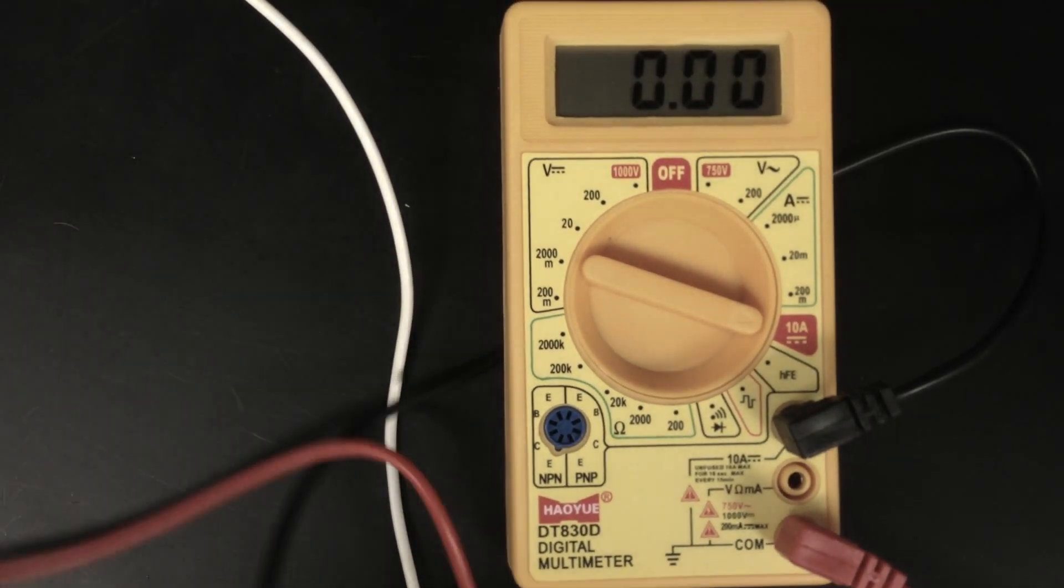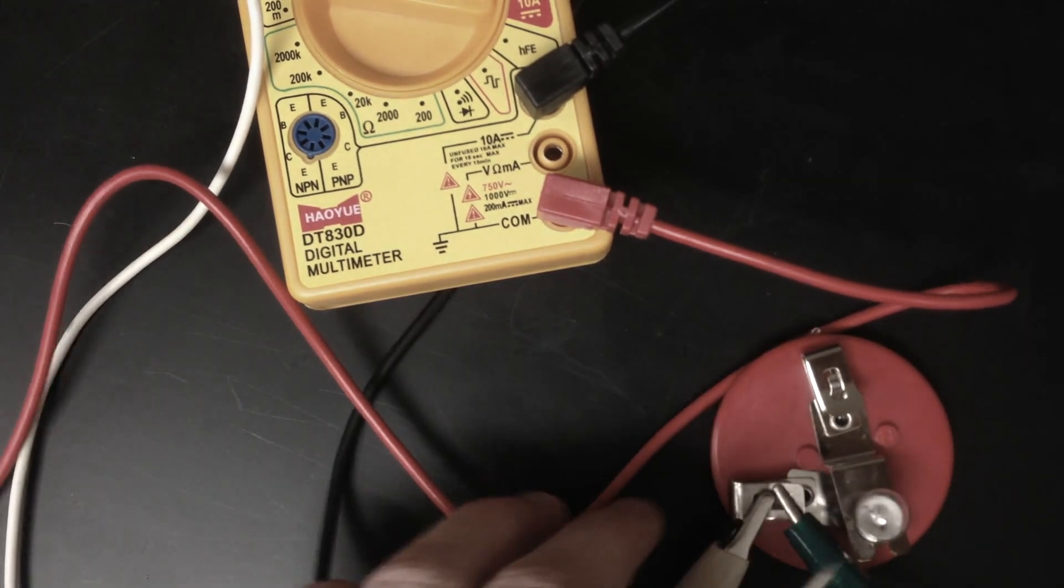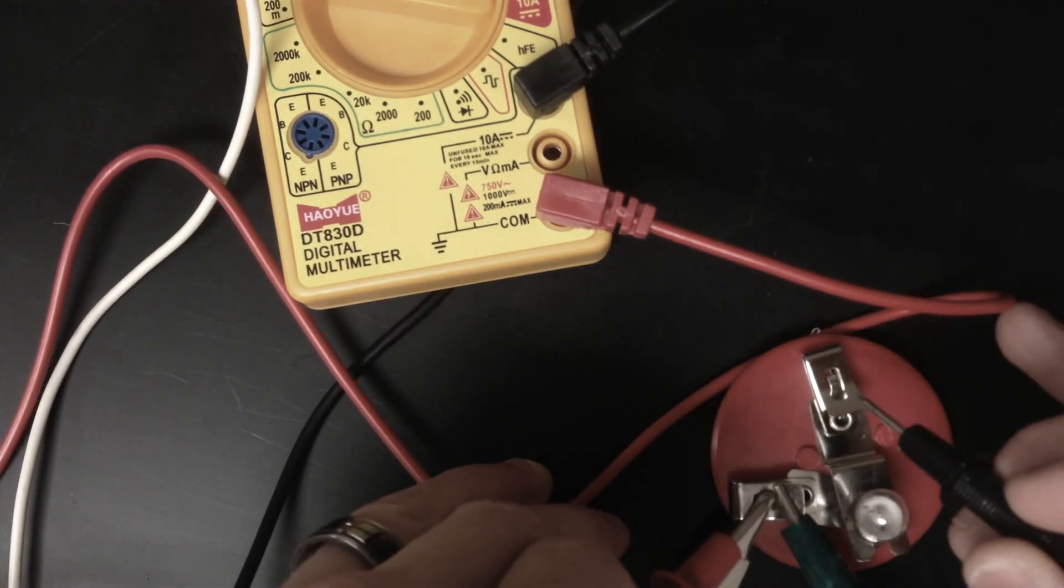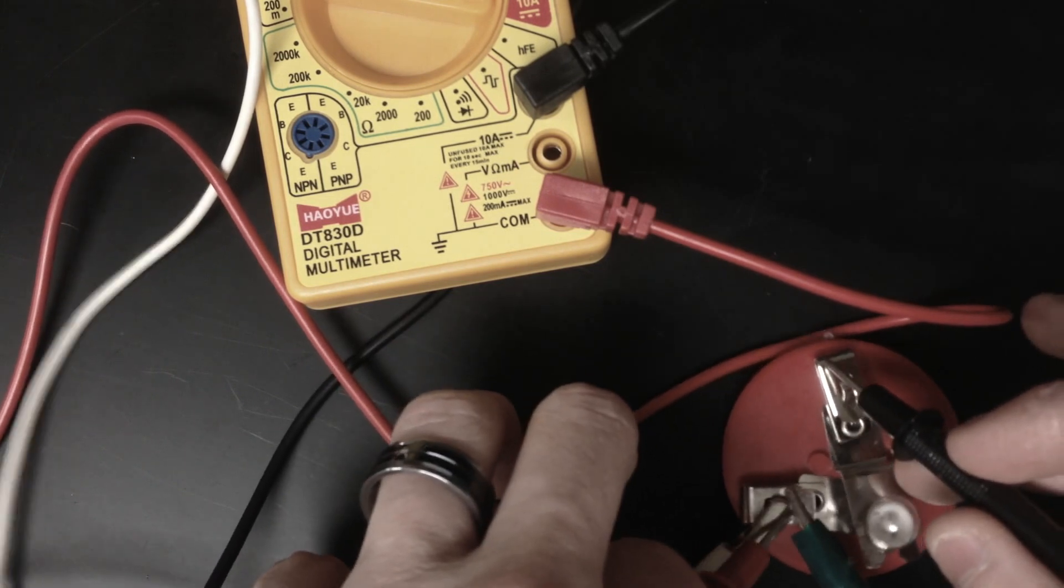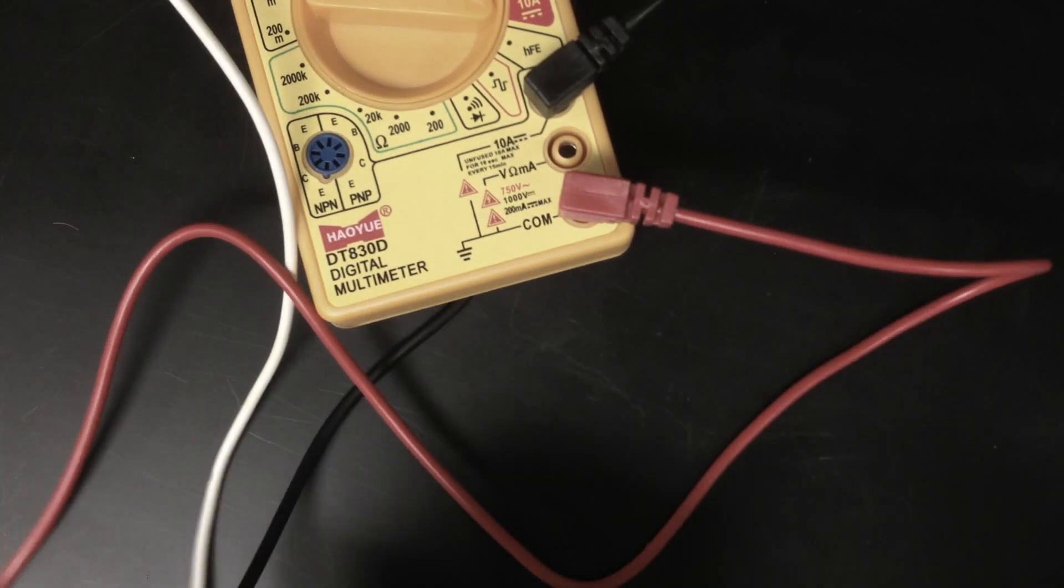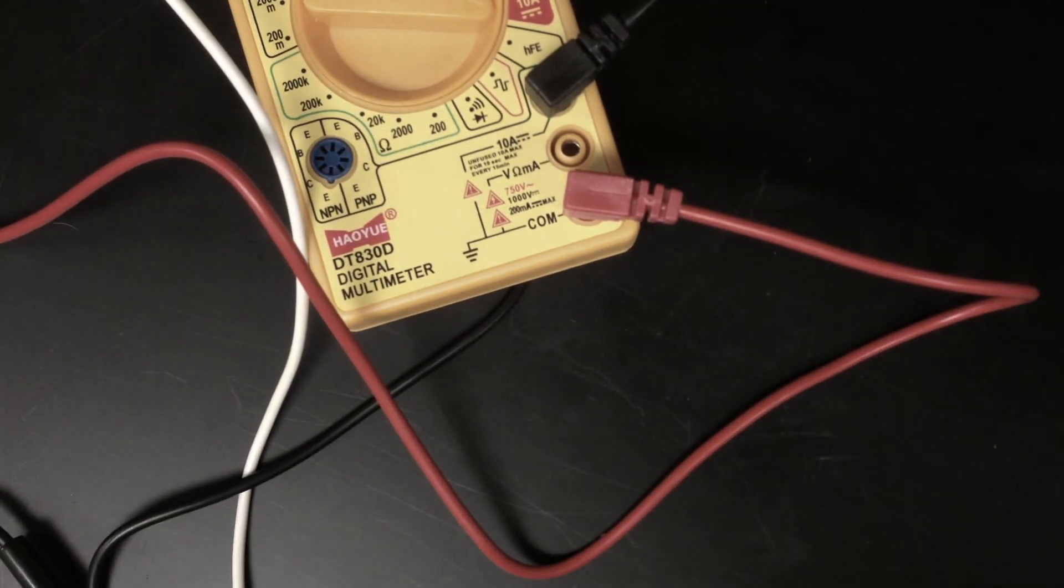Measuring current is different than measuring voltage. To measure voltage, remember, what you would do with a light bulb to measure the voltage drop there is you would take your probes and you would touch them to either side of the bulb. That's still how to measure voltage. But measuring current is a little different.